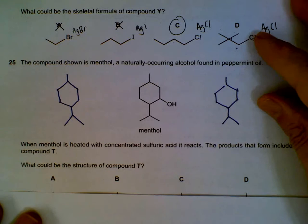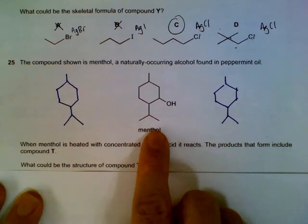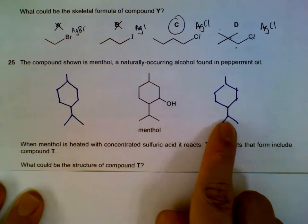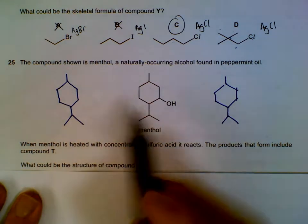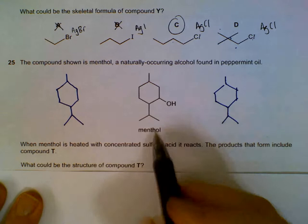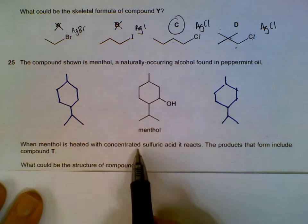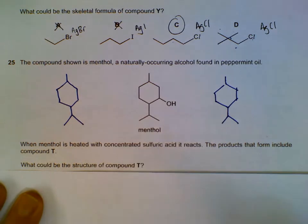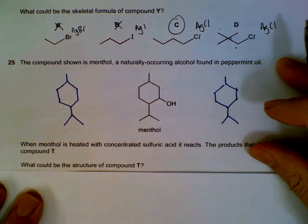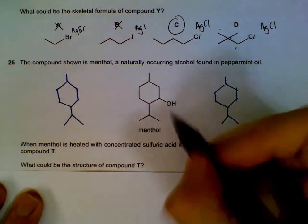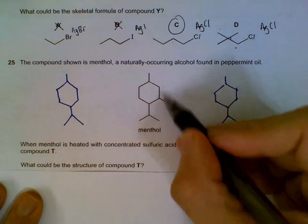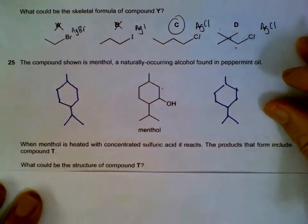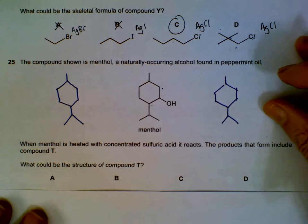Question 25: You have this structure. I have drawn two structures on the left and right we shall be using later. We have this structure that when heated with concentrated sulfuric acid will actually be dehydrated, meaning the OH will be gone and it will be removing a hydrogen from the neighboring carbons. What could the structure be?